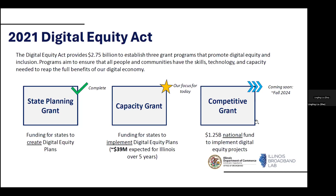The second grant is the Digital Equity Capacity Grant, which is the main focus of our conversation today. This is funding for states to implement the digital equity plan, and Illinois is expected to receive over $30 million over the next five years. The third part of the Digital Equity Act is a competitive grant coming in fall 2024 — this is $1.25 billion in national funding to implement digital equity projects — another resource in addition to Illinois's digital equity capacity grant that our office will be administering.